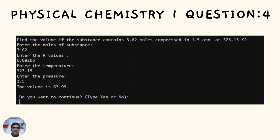The last question for Physical Chemistry 1: Find the volume when a substance contains 3.62 moles compressed at 1.5 atm and 323.15 Kelvin. Enter the moles, which is 3.62. Enter the R value, which is 0.08205. Enter the temperature, which is 323.15. Enter the pressure, which is 1.5 atm. As a result, the code determines the volume to be 63.99.